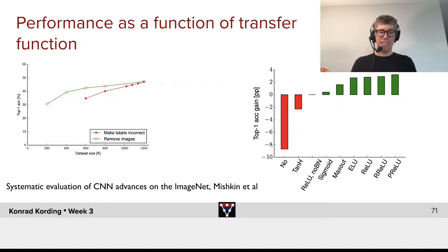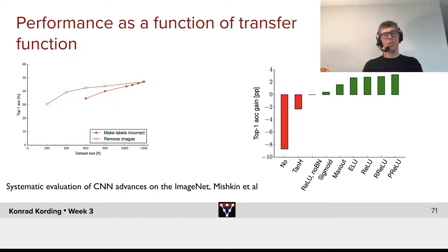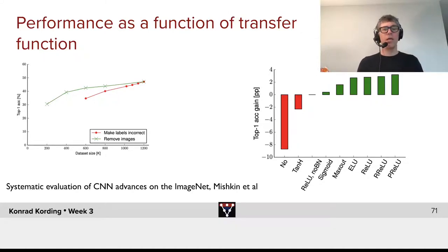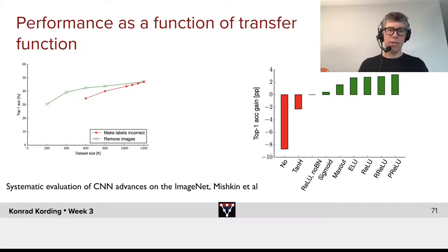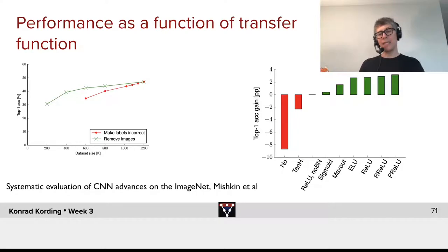What we have here on the left-hand side is just an analysis of how important the amount of data is. We see that as we scale the data set from, say, 600,000 to 1.2 million by removing images, we lose our performance and go from getting roughly 45% right to roughly 40% right. So it's a small difference that that factor of two in training data makes, but it's a highly significant one. But it gives us a scale to compare the importance of transfer functions to.